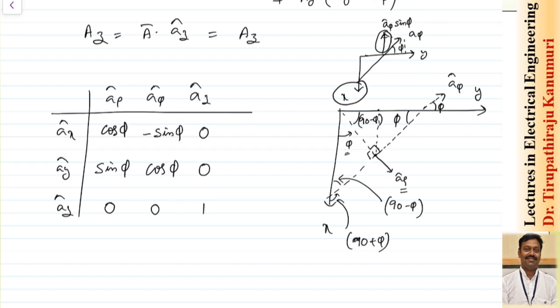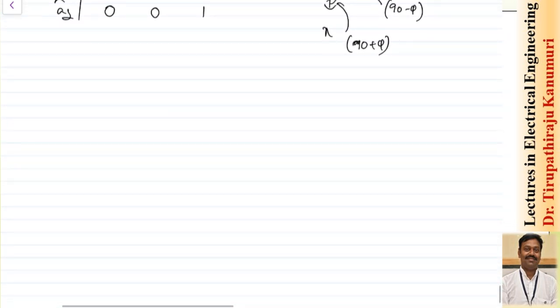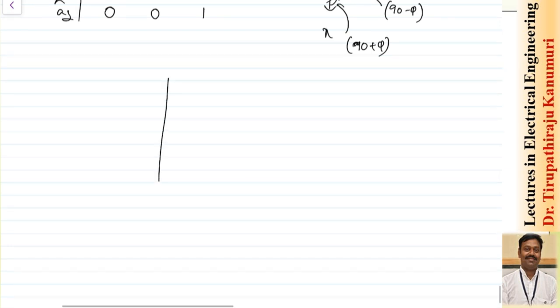You can either remember this table or derive it instantly in the exam. In the next class we will take a numerical example and I will derive everything from scratch at that point, so you can see how to calculate it easily without memorizing. Before that, let us continue with how to calculate the differential length, area, and volume in the cylindrical coordinate system.